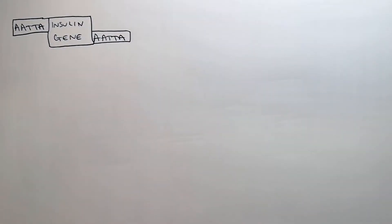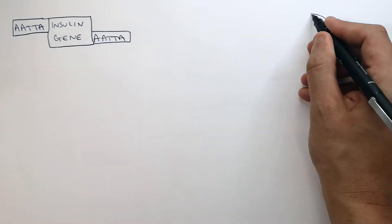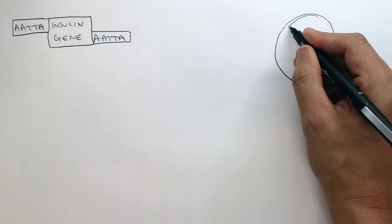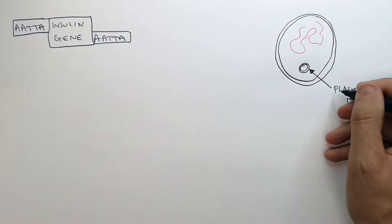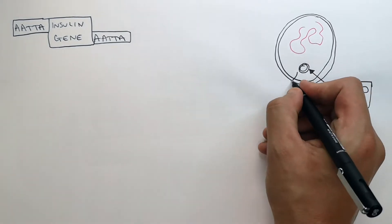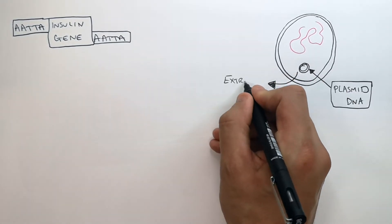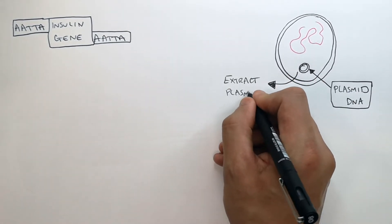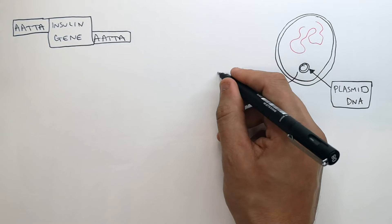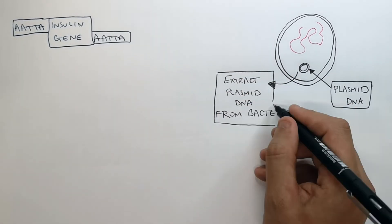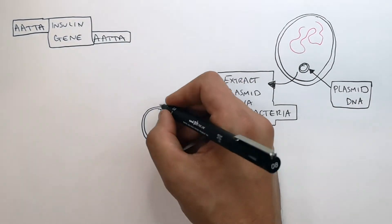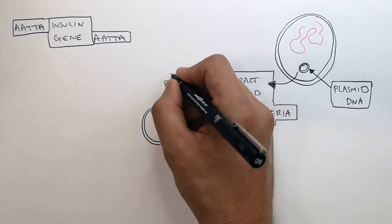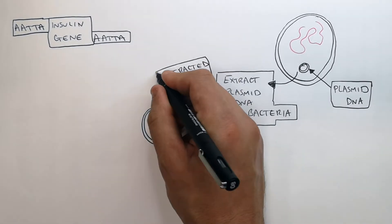After using restriction enzymes to cut out the target gene, we now get a bacterial cell. We extract the plasmid DNA from the bacteria.